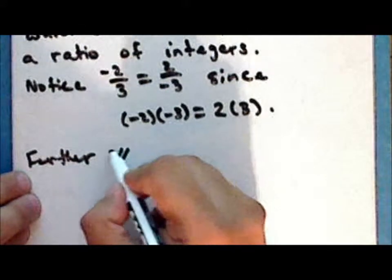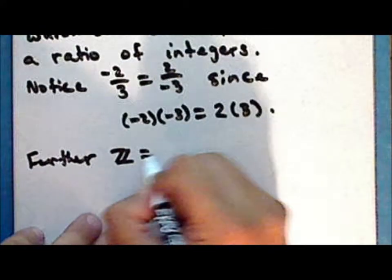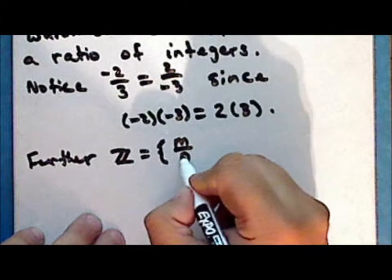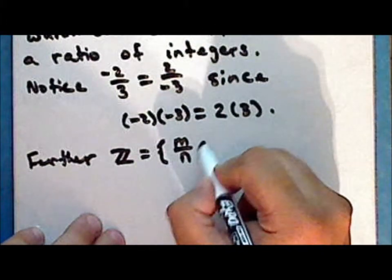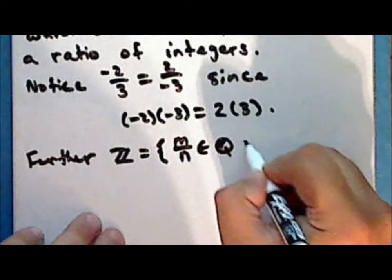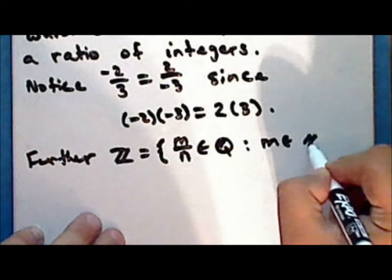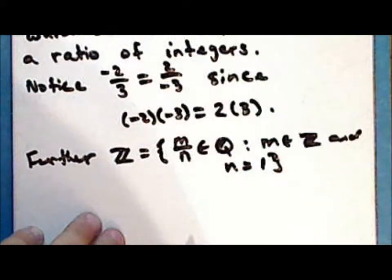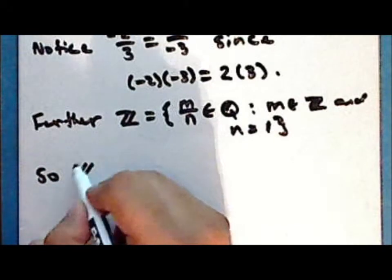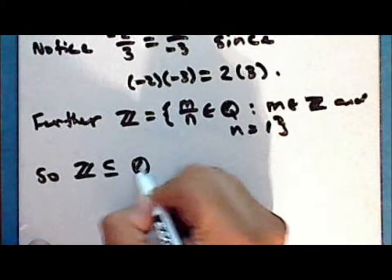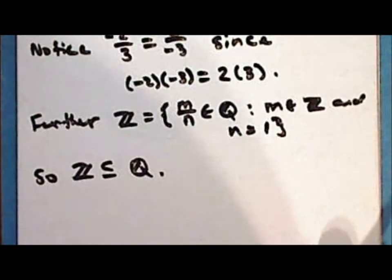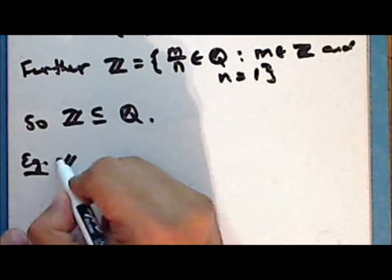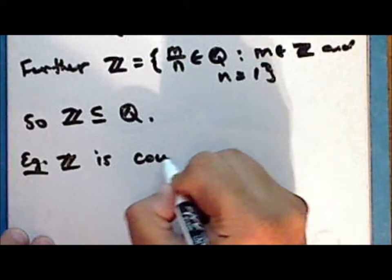Further, the set of integers is the set of numbers m over n in the rational numbers such that m is any integer and n is the integer 1. And so the set of integers is a subset of the set of rational numbers. Next we will show that the set of integers is countably infinite.